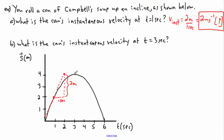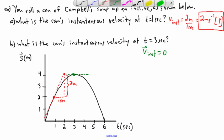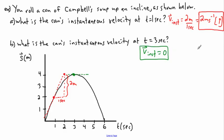At t = 3 seconds, I mark a dot on the graph and draw a tangent line. Zooming in, you'd see it goes straight across — a horizontal line. The slope of a horizontal line is zero, because there's no rise. So V_instantaneous at t = 3 seconds is just zero. We don't really need units here since zero doesn't have units, though technically I should include the vector symbol.